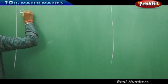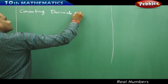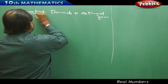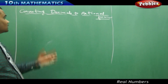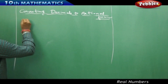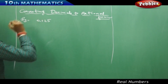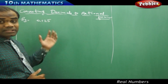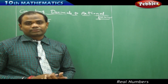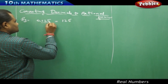So converting decimals to rational form. Let's take an example problem and see how a decimal number can be converted to its respective rational number. For example, if I have 0.125 as the number, then this is clearly a decimal number with three values after the decimal point.